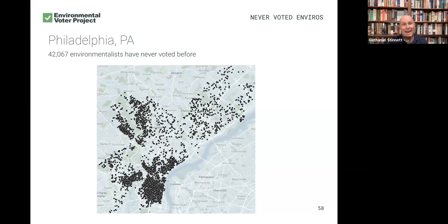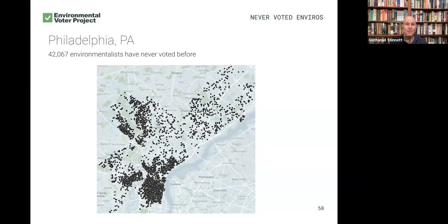So this is how we individually target low-propensity environmental voters at the Environmental Voter Project. If getting briefings like this about mobilizing environmental voters and modern techniques that political campaigns use is of interest to you, please comment, let us know how much you liked this, ask any questions, and please subscribe to our YouTube page so you can get notified whenever we come out with new briefings. Thank you so much for being part of our work at the Environmental Voter Project. I hope to see you at the next briefing.